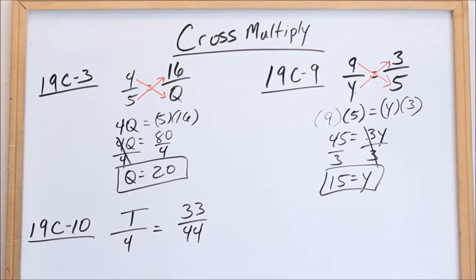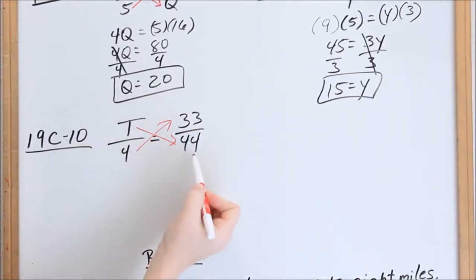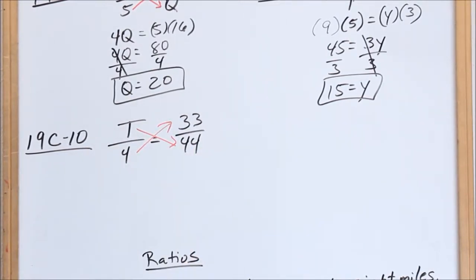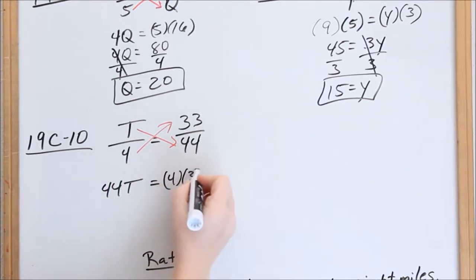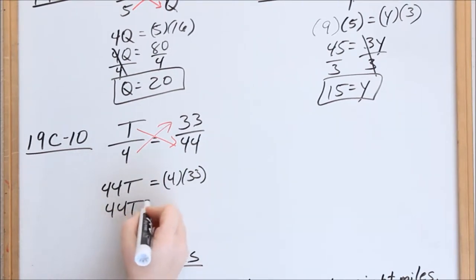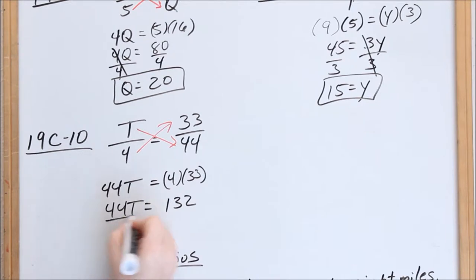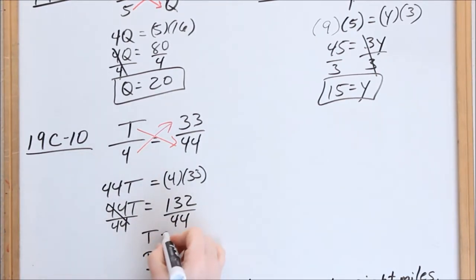Looking at 19c10, you have a fraction set equal to a fraction, so you cross multiply. You take one numerator times the other denominator, set it equal to this denominator times the other numerator. So, t times 44 — we say 44t, you put the number first then the letter — set equal to 4 times 33, which is 132. I need to get rid of my 44; it's being multiplied, so I divide both sides, and that equals 3.